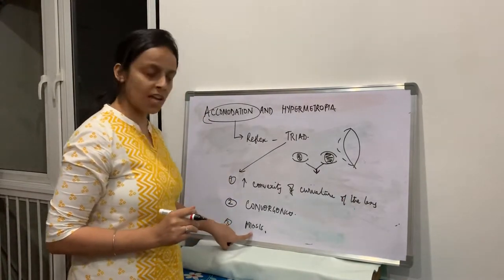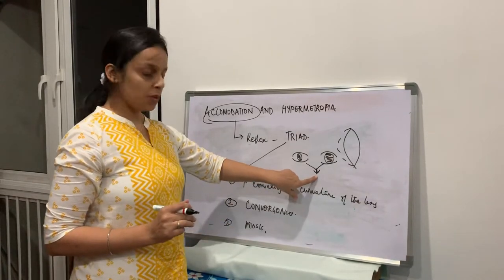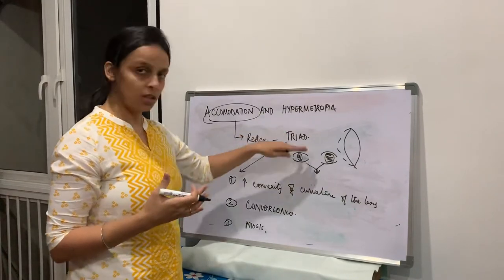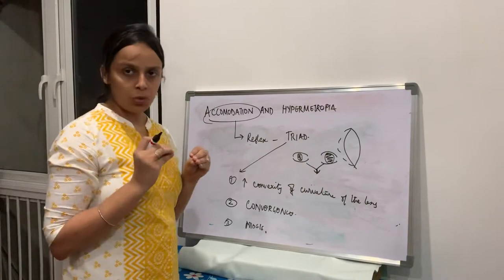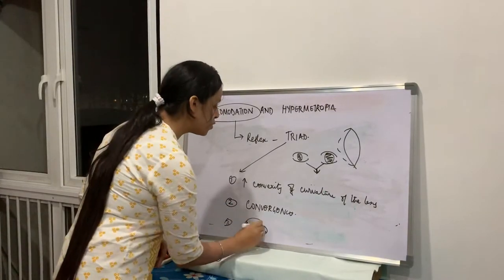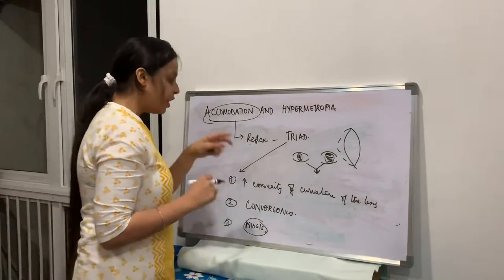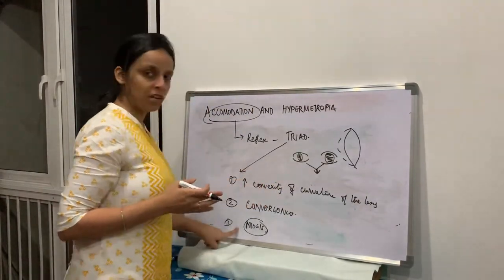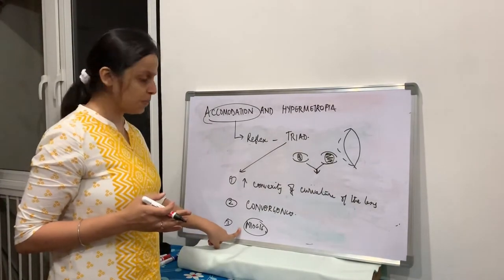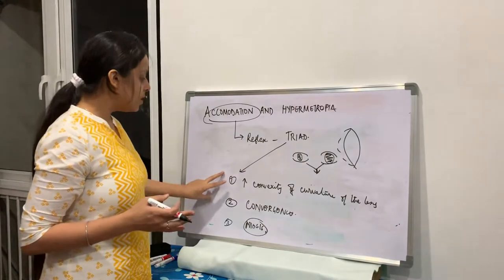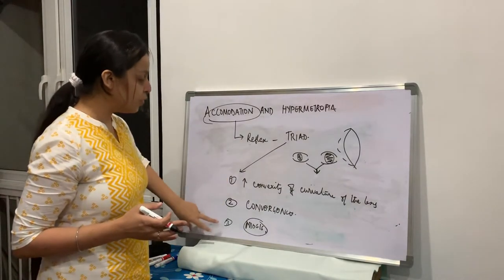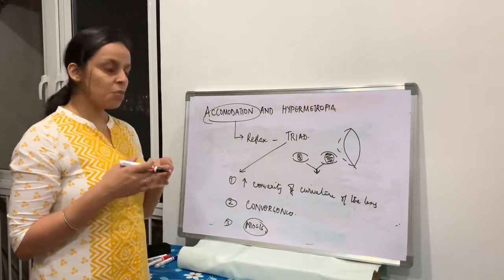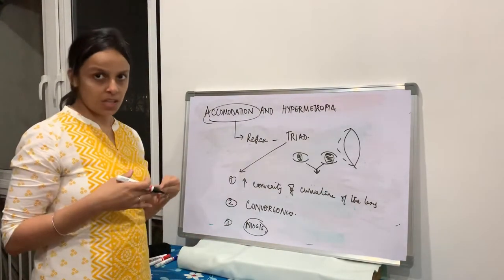Miosis happens because the object placed close to the eye produces many rays of light. The pupil becomes small to limit the amount of light entering the eye and to cut off peripheral rays arising from the object. All three components of this triad can occur independently, but together this reflex is called accommodation, helping you see objects close to the eye.